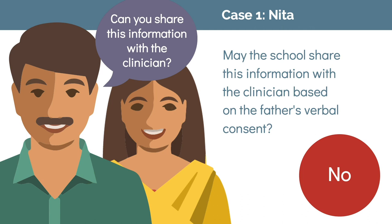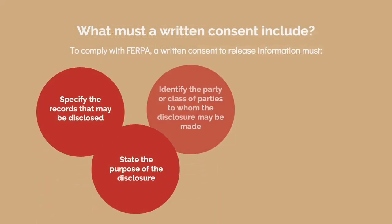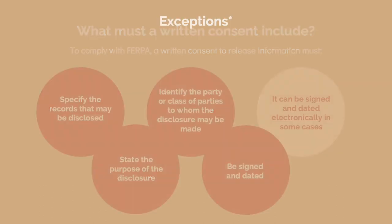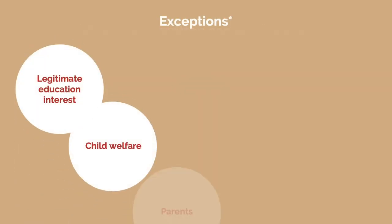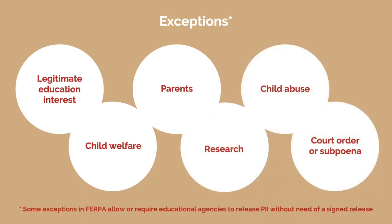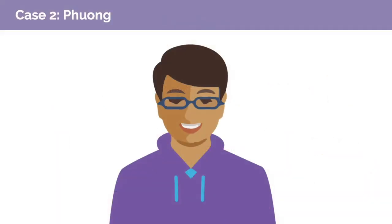Nita's father would sign the release form. In this case, since everyone involved supports disclosure, that requirement should not be a barrier to collaboration. FERPA requires certain elements in a release form. A written consent to release information needs to specify that records may be disclosed, state the purpose of disclosure, identify the party to whom the disclosure may be made, and must be signed and dated. There are some exceptions in FERPA that allow release without a written form, including for emergencies, child abuse reporting, and research. There is more information about each of these exceptions at schoolhealthcenter.org.